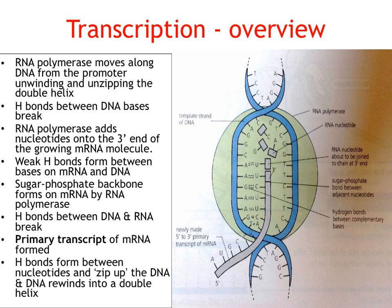Here is the transcription overview in diagram form. We have our section of DNA involved in gene expression or making our protein. The RNA polymerase moves along the DNA from the promoter, and as it does that, it unwinds and unzips the DNA double helix. The hydrogen bonds between the DNA bases break as that unzipping happens, and then the RNA polymerase adds nucleotides onto the three prime end of the growing molecule.